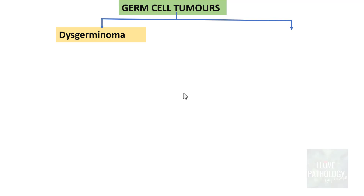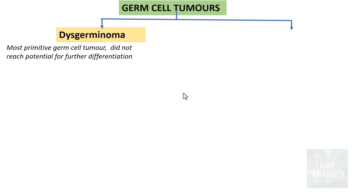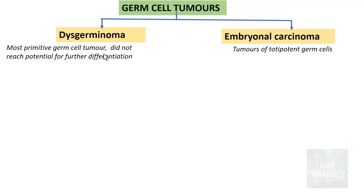The first and most important germ cell tumor in the hierarchy of classification is Dysgerminoma, which is the most primitive germ cell tumor. It is the most primitive because this particular germ cell did not reach the potential for further differentiation — meaning that at an early stage these cells may have had mutations or dysregulation and formed the tumor. The next stage is conversion of pluripotent germ cells into totipotent germ cells; at this stage, if there is any mutation, the tumor which is formed is Embryonal Carcinoma.